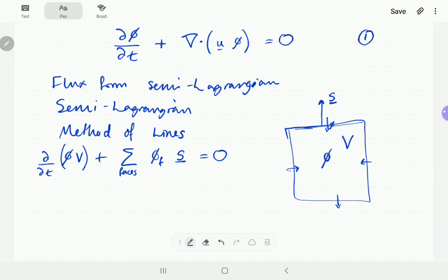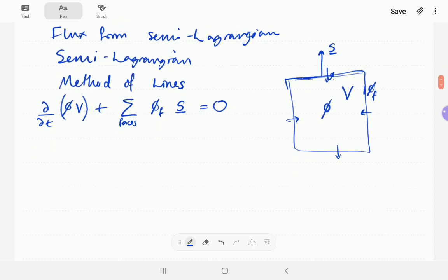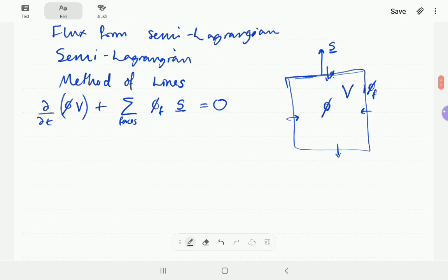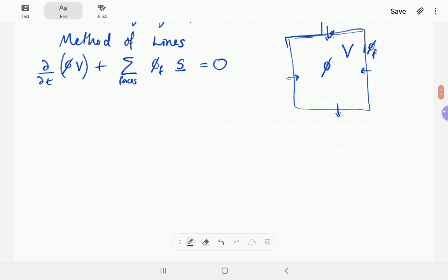So the approximations come in because you have to estimate this phi at the face from surrounding values. So at the moment, that's not flux form semi-Lagrangian, that's just the finite volume method. To make this flux form semi-Lagrangian, the way that we estimate this phi at the faces is by working out the amount of mass that travels through this face in one time step.